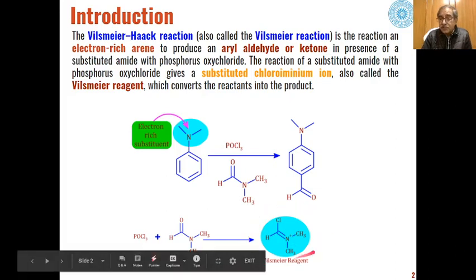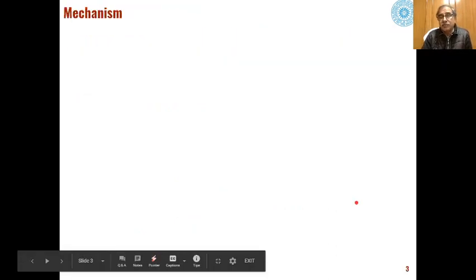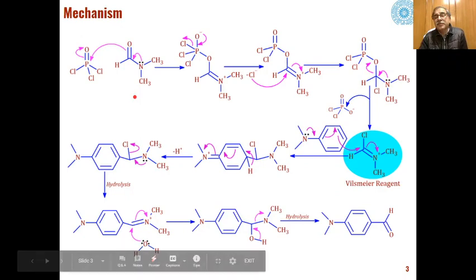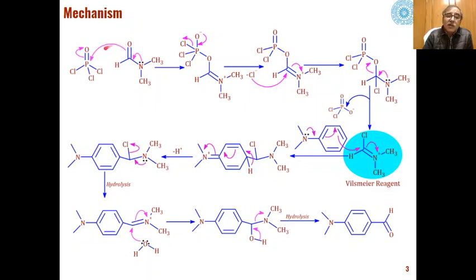In the first step, these two reagents react to create the Vilsmeier reagent, which acts as an electrophile for substitution in electron-rich arene compounds. The basic mechanism begins with the lone pair on the nitrogen of the N,N-substituted amide shifting to the carbon, forming a carbon-nitrogen double bond. The oxygen then attacks the electrophilic phosphorus of phosphorus oxychloride to give an intermediate.